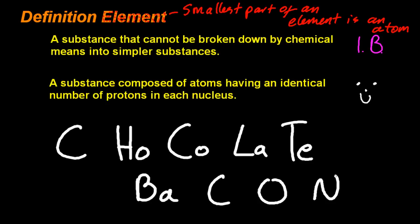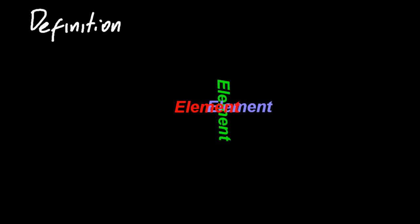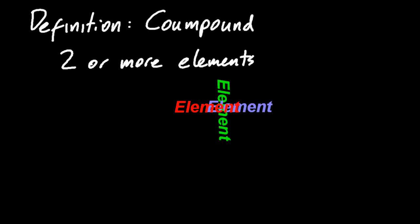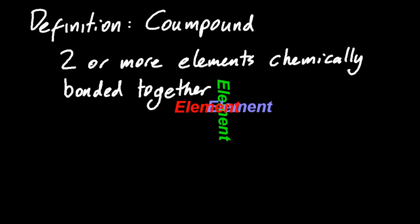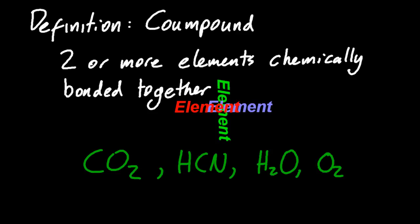There are some elements with symbols of one, two, or three letters. Bacon - hold on, I'm vegetarian. If you combine elements together, you make a compound. The definition of a compound is two or more elements chemically bonded together. Some examples include carbon dioxide, hydrogen cyanide, and water.